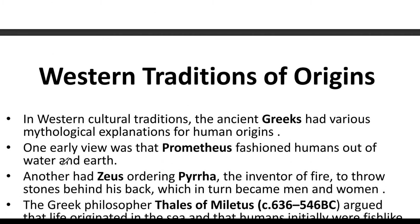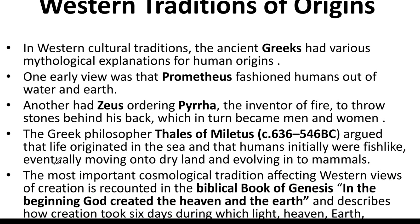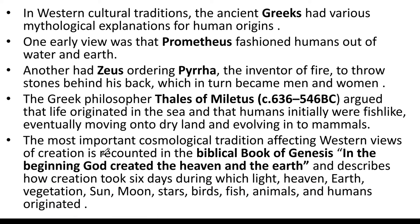In the western cultural tradition, the ancient Greeks had various mythological explanations of human origins. One early view was that Prometheus fashioned humans out of water and earth. Another had Zeus ordering someone to throw stones behind their back, which turned into men and women. Greek philosophers Thales and Anaximander argued that life originated in the sea and that humans were initially fish-like, eventually moving onto dry land and evolving into mammals. The most important cosmological tradition affecting western views is recounted in the biblical Book of Genesis, describing creation over six days.